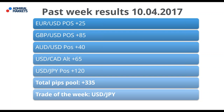I think that EURUSD might go even more to the upside, although it's already rejected from the 70-80 region, but it could go up, so I will be buying the dip. Past week results: EURUSD position +25, GBPUSD position +85, AUD +40, USDCAD +65, USDJPY position +120. We had 335 pips in the pool, and trade of the week was USDJPY — this was clearly the trade of the week.